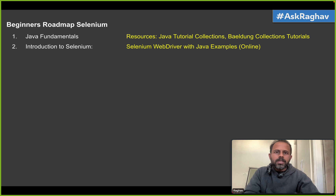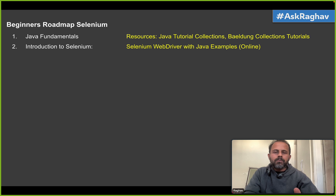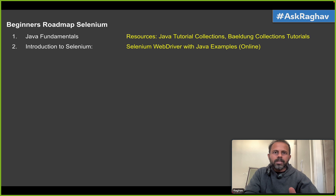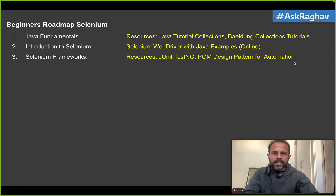Here we have to understand how we use Selenium to interact with a browser and a web application. For example, how do we use Selenium to work with web elements — like how do we write text in a text box, select something from a dropdown, handle alerts and pop-up boxes, check a checkbox, or click a radio button. These are the very basics of interacting with web elements.